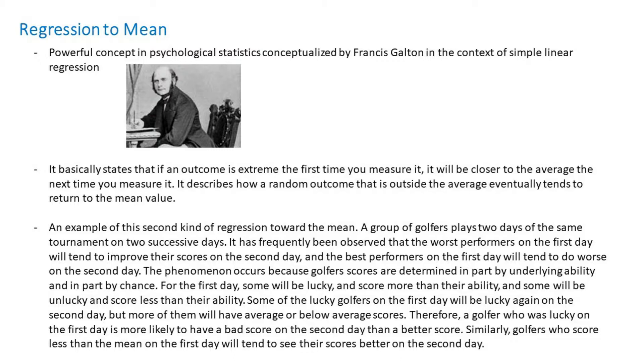A classic example pulled from Daniel Kahneman's book 'Thinking Fast and Slow' is the performance of golfers. A group of golfers plays in the first two days of the same tournament on two successive days. It has frequently been observed that the worst performers on the first day will tend to improve their scores on the second day, and the best performers on the first day will tend to do worse on the second day. This phenomenon occurs because golfers' scores are determined in part by underlying ability and in part by chance.